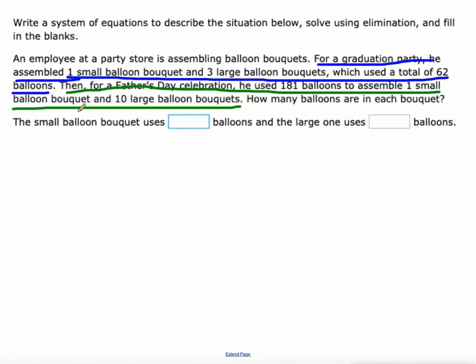One small and three large used 62 balloons, so S + 3L = 62. I could put a one in front of that S, but one S is the same as S. Then for Father's Day, he used 181 balloons to assemble one small bouquet and ten large, so S + 10L = 181. There's our linear system, we just need to solve it.